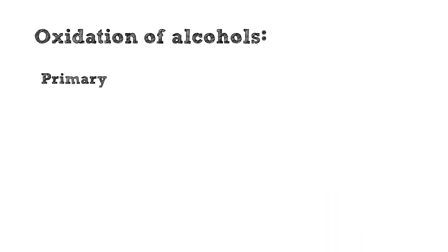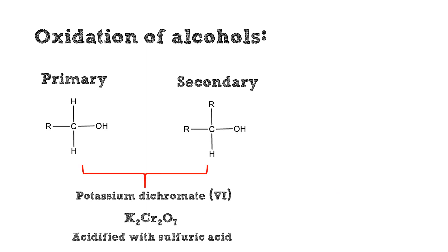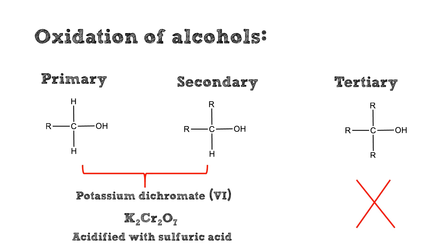Potassium dichromate K₂Cr₂O₇ acidified with sulfuric acid can oxidize primary and secondary alcohols, but fails to oxidize tertiary alcohols.